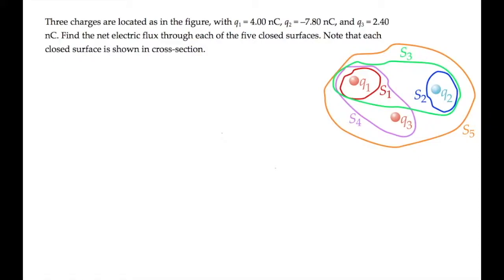This problem gives us a collection of charges and a number of closed surfaces, shown in cross sections as the colored paths, and asks us to find the net electric flux through each of them.